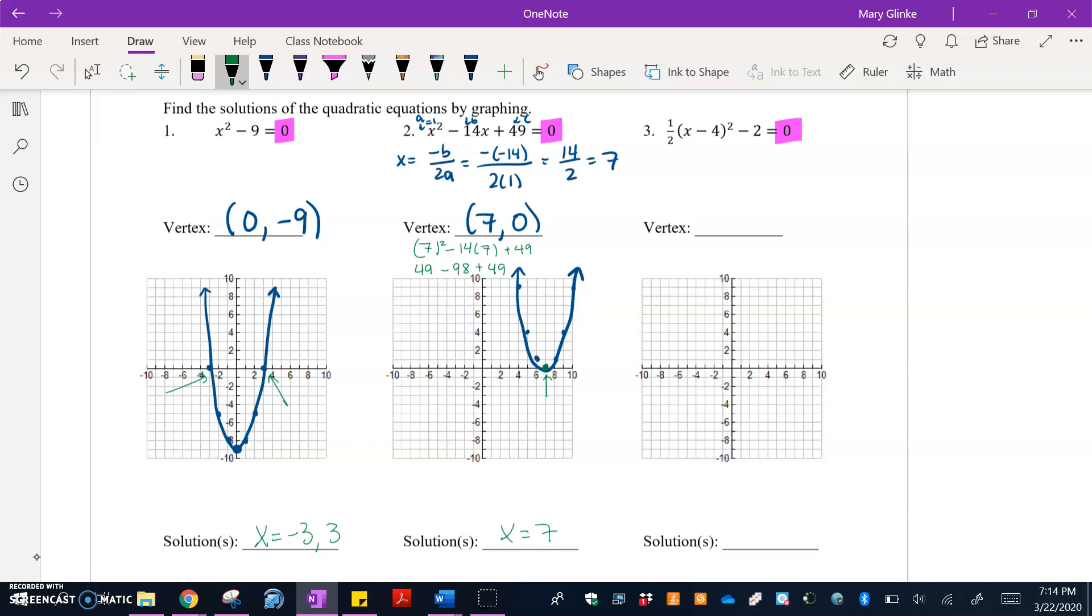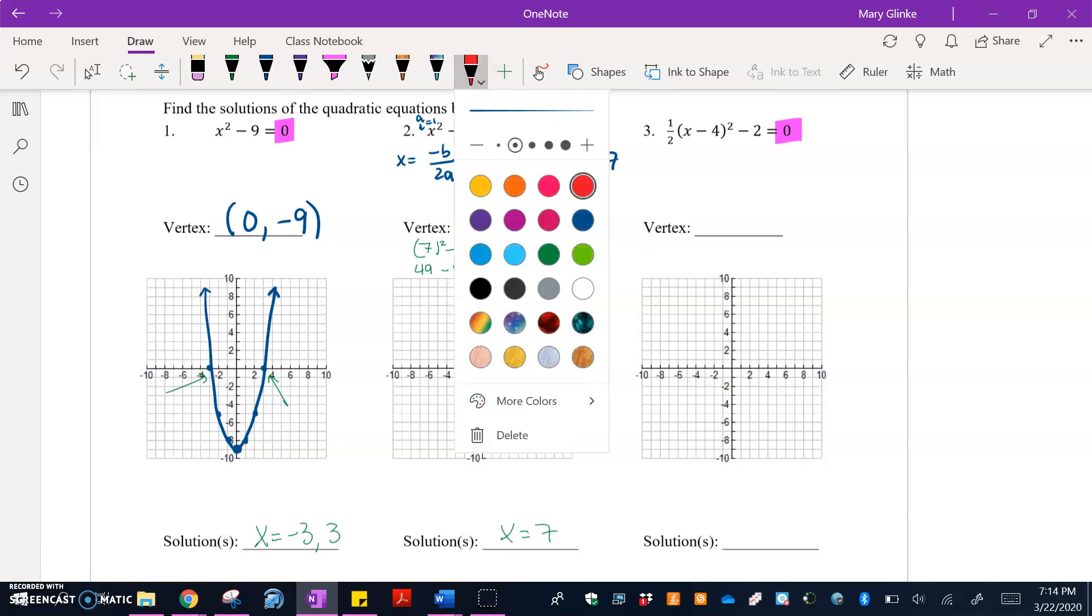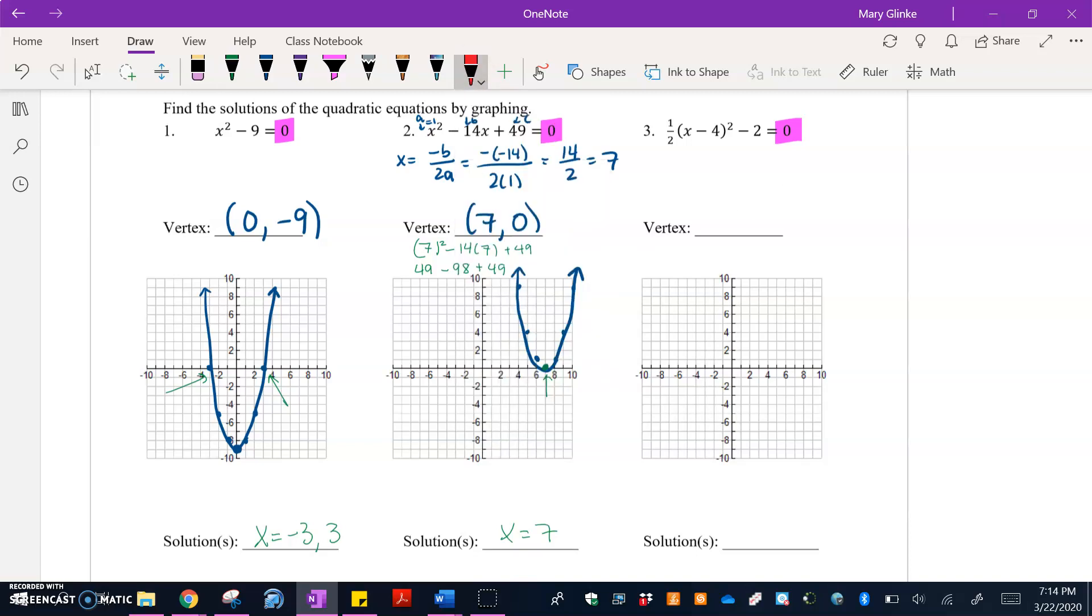My last graph here is going to be in vertex form. So it's already in (h, k). So I'm going to take what's inside the parentheses and do the opposite, meaning I'm moving right four, and then my k value shows I'm going down two.